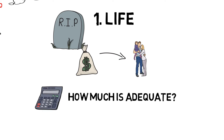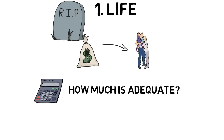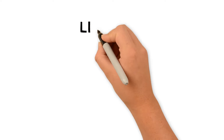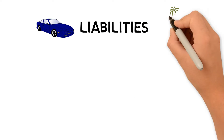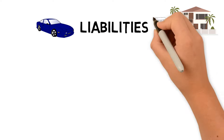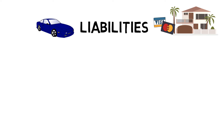Here's how to calculate your ideal life coverage. First, add up all your liabilities such as car loans, house loans, and credit card debts. This is to ensure that your family has the amount of cash to clear your liabilities when you are no longer here.